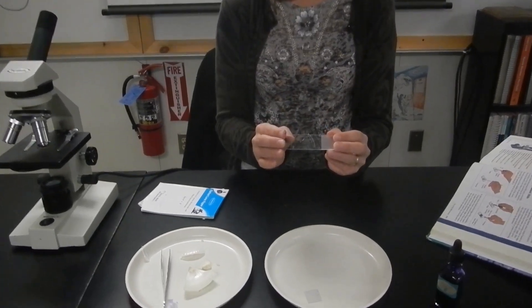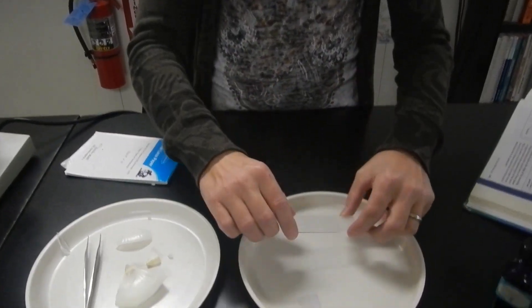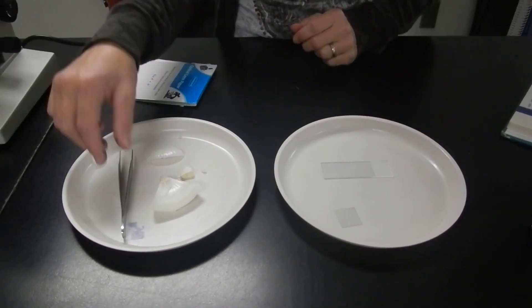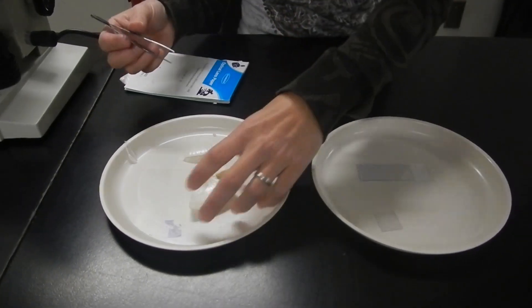The first thing that you want to do is obtain a clean microscope slide. The second step is you're going to place your specimen in the center of the slide.